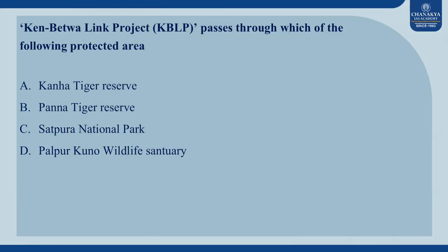Question No. 1: Ken Betwa Link Project passes through which of the following protected areas? The options are A. Kanha Tiger Reserve, B. Panna Tiger Reserve, C. Thadpura National Park, and D. Palpur Kuno Wildlife Sanctuary. The correct answer is B. Panna Tiger Reserve.